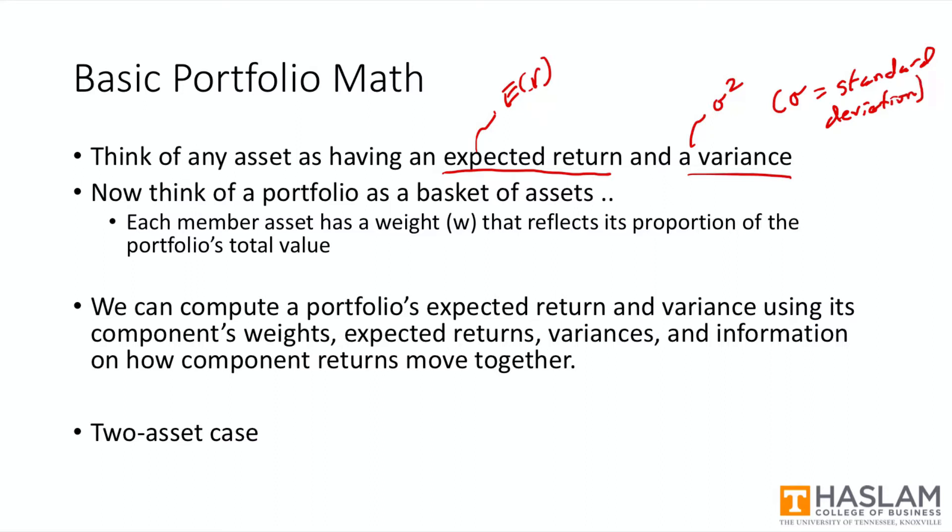If you know the variance, you just take the square root and you have the standard deviation. Now think of a portfolio as just some basket of assets, and each of the portfolio's member assets will have its own unique weight, and we'll call the weight W.